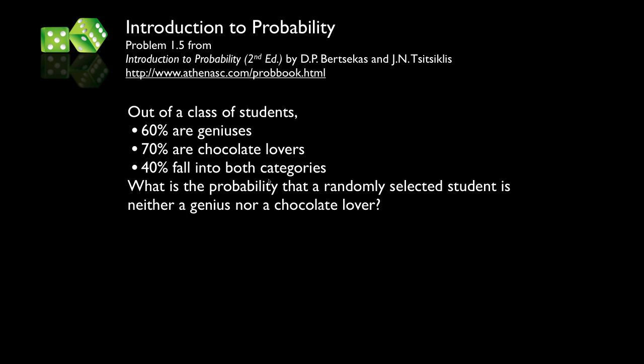Before we look at this problem, let's review what we've been told. The probability that a randomly selected student is a genius is 0.6, and the probability they are not a genius is 0.4. The probability that a student is a chocolate lover is 0.7, and the probability they are not a chocolate lover is 0.3. The probability that they fall into both categories is 0.4, and the probability that they do not fall into both categories is 0.6.